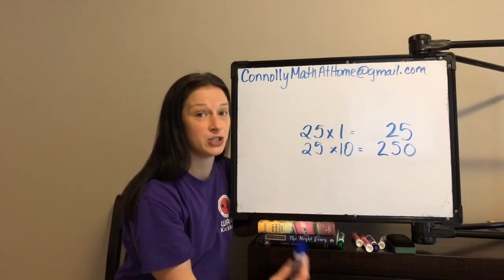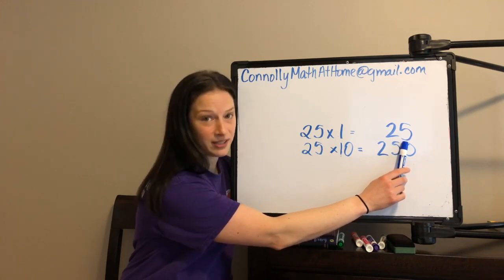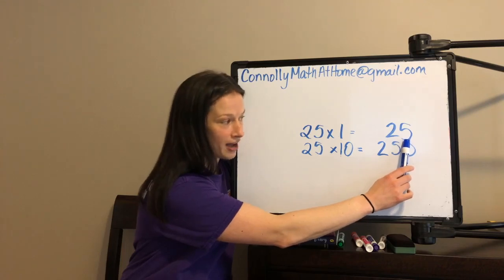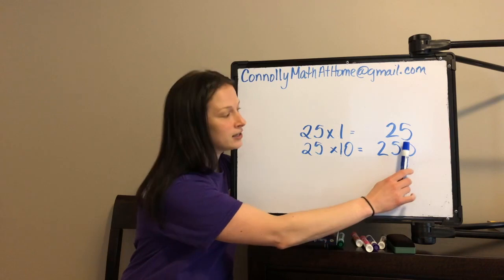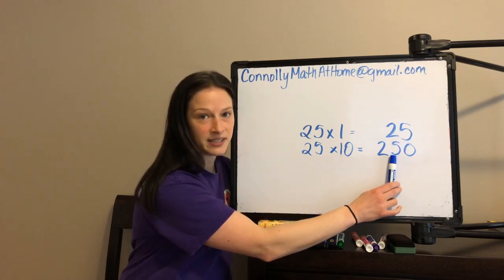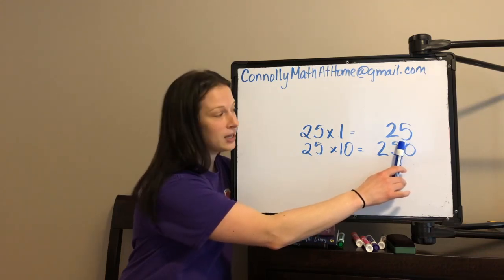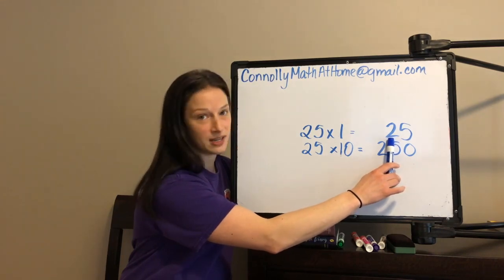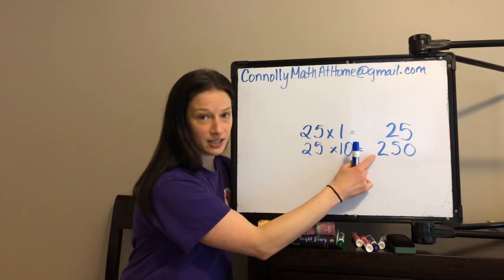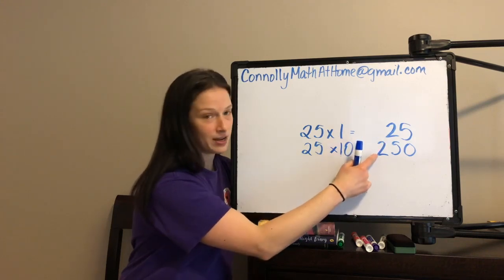What's happening is the factor got 10 times greater, so your product is getting 10 times greater, and then something happens with each digit. The 5 here was in the 1s place, representing 5 ones, representing the number 5. When our product got 10 times greater, the 5 also got 10 times greater. The digits were shifting to the left and getting 10 times greater. So this used to represent 5 ones; when it's in the 10s place, it represents 5 tens. And we know that 50 is 10 times greater than 5.